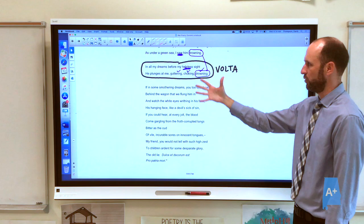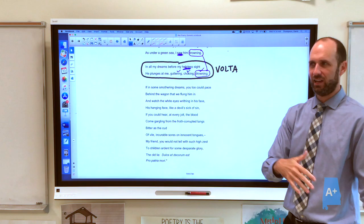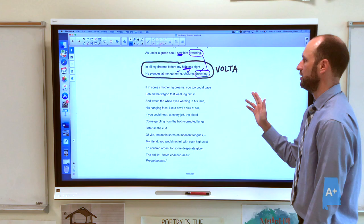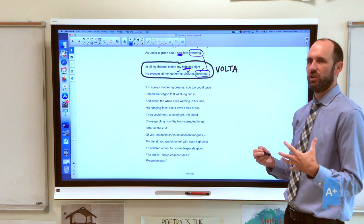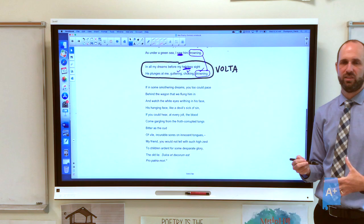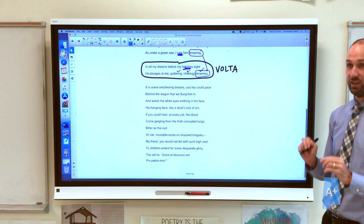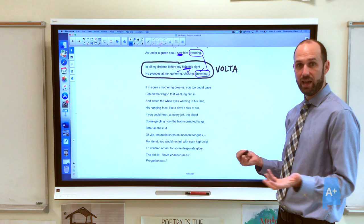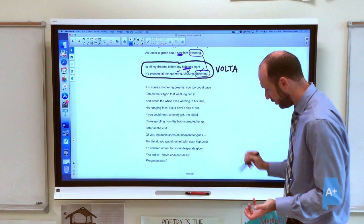Our speaker, the survivor who survived the gas attack, says, If in some smothering dreams, we have the word dreams repeated again. These dreams make me feel like I can't breathe. You too could pace behind the wagon that we flung him in. So the guy is so sick, they fling him into the wagon. So the story kind of continues, but at the same time, he is speaking to somebody. A lot of times people think that he is speaking to an elementary school teacher who's telling his students, like in a little circle, about the glories of war. Because this poem is about a takedown of the glories of death in war. I often have to say to students, this is not a poem that's saying that there's not such a thing as noble sacrifice and patriotism or that it's not sacrificial to die for your country. The poet is angry that somebody has the nerve to say it's beautiful to die for your country. He's like, it is not beautiful.